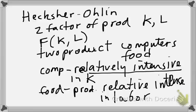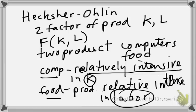This idea of being relatively intensive is hard to pin down without more algebra, so we'll leave it loose. We say computers are relatively intensive in capital and food is relatively intensive in labor. The idea is that both sectors face the same prices for capital and labor, but capital has a higher marginal product in the computer sector, so the computer sector uses relatively more capital compared with labor, compared with the food sector. It's that double comparison.